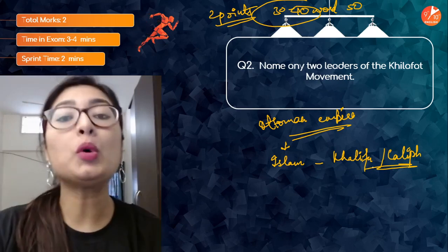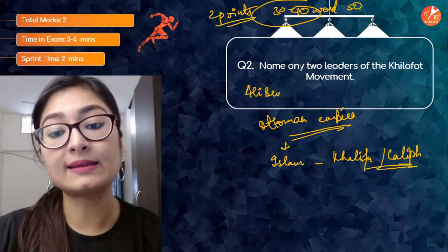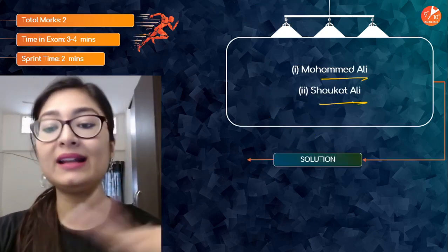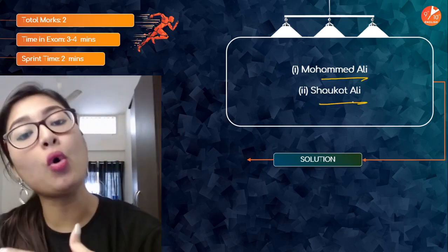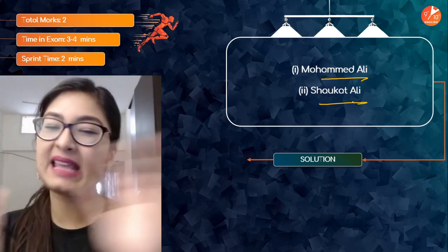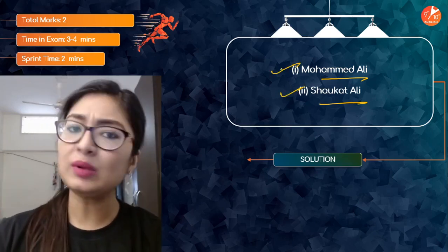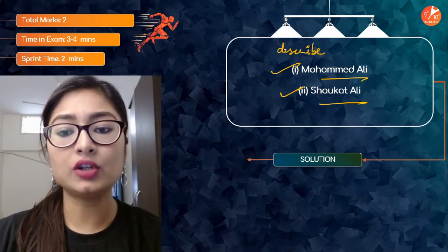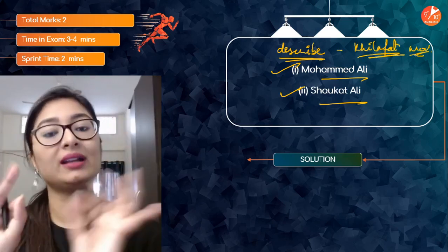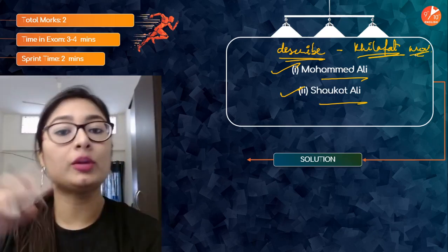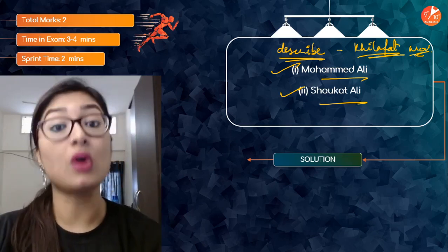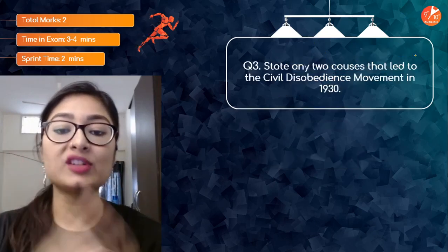Everyone, especially Muslims in India, started opposing the British who had fought against the Ottoman Empire. This whole movement was called the Khilafat Movement. A group of Muslims got together to oppose this, and it was led by the Ali Brothers — Muhammad Ali and Shaukat Ali. These two names are what you have to mention. They eventually collaborated under the Satyagraha with Gandhi ji and worked together with the Non-Cooperation Movement.